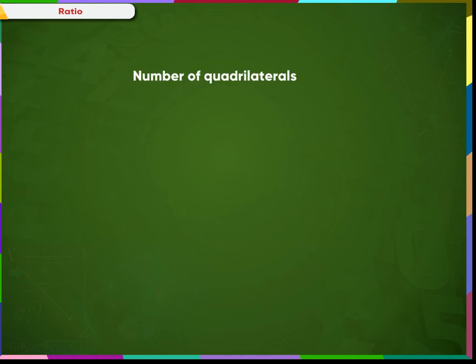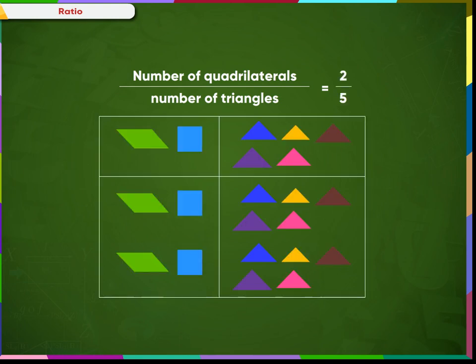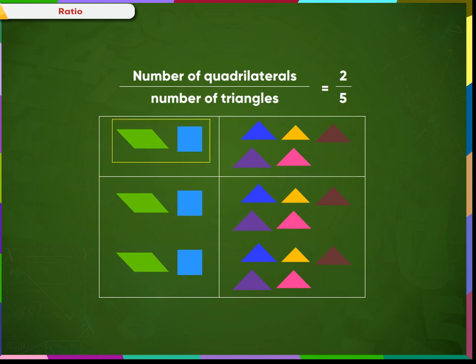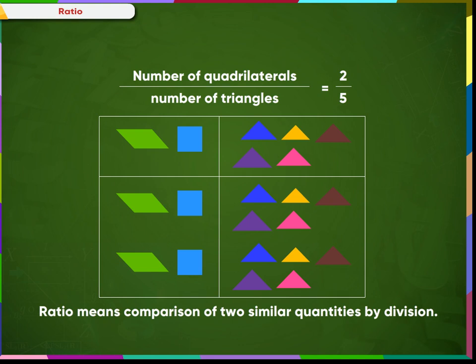We can also compare these two quantities using division. We can say that the ratio of number of quadrilaterals to the number of triangles is 2 to 5. This means for every 5 triangles, there will be 2 quadrilaterals. If there are 10 triangles, then there will be 4 quadrilaterals — 2 sets of tangrams. Thus, ratio means comparison of two similar quantities by division.